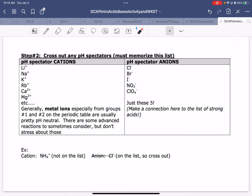I like the general rule here. Metal ions, especially from groups one and two on the periodic table, are usually pretty pH neutral. There's some advanced reactions that we have to consider sometimes, but don't stress about those. I look to see that chlorine is on my list, so I'm going to cross this one out. NH4 is not on the list.